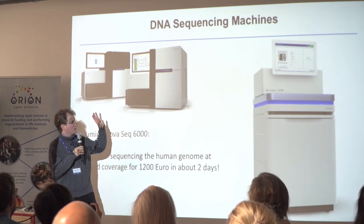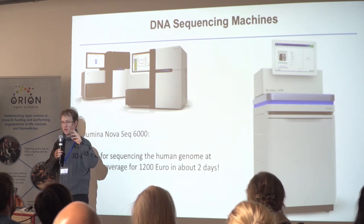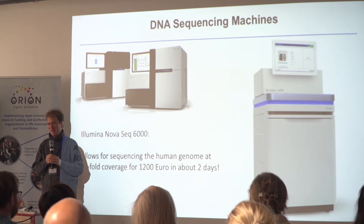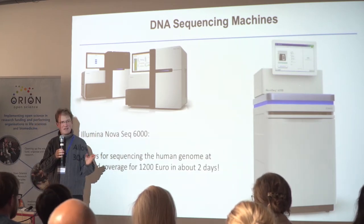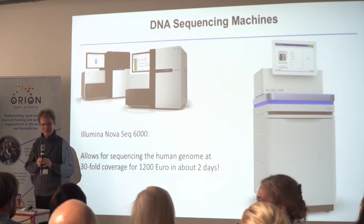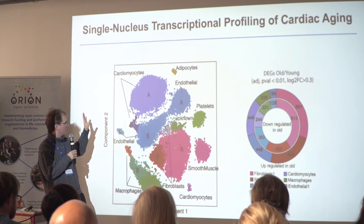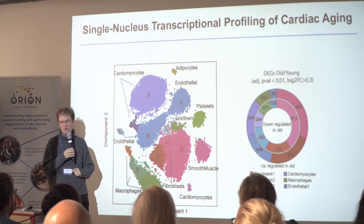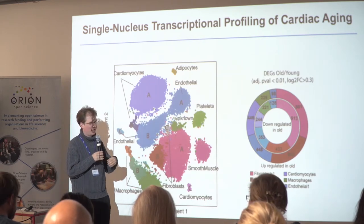We just purchased a new machine which allows you to sequence an entire human genome with so-called 30-fold coverage — with high quality — for around 1,200 euro, making it quite attractive. In the US, many people use this technology to analyze their own genomes. This allows us to display in a very colorful way the various cell types that we detect in the heart.